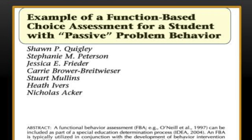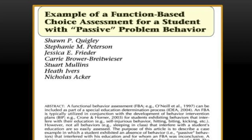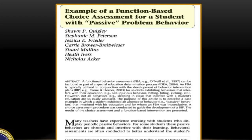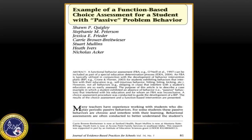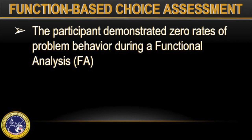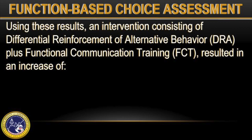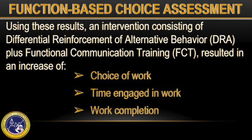For example, Quigley and colleagues used a choice assessment to inform the design of a behavior intervention plan for a nine-year-old boy diagnosed with autism. The participant demonstrated zero rates of problem behavior during an FA. Choice assessment results indicated a preference for adult attention and preferred items. Using these results, an intervention consisting of DRA plus FCT resulted in increased choice of work, time engaged in work, and work completion.